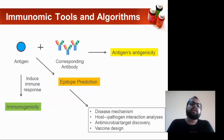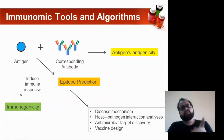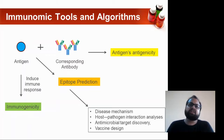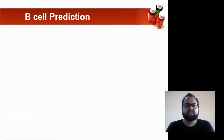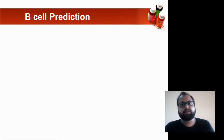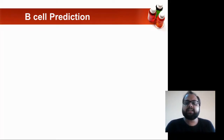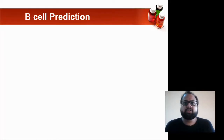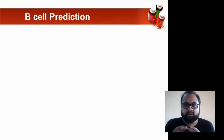There are various ways or tools with which we can carry out this prediction. The first prediction mechanism is your B-cell epitope prediction. So what exactly are your B-cell epitopes?